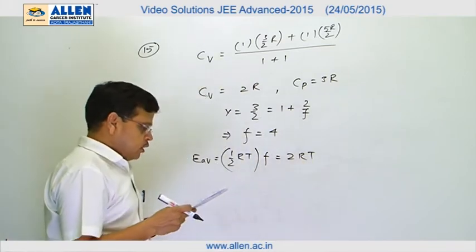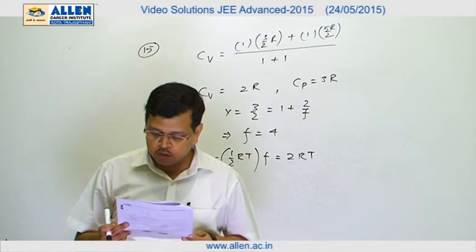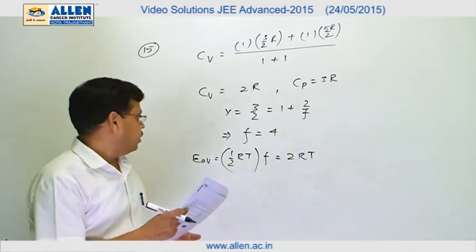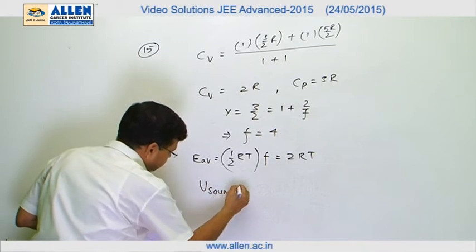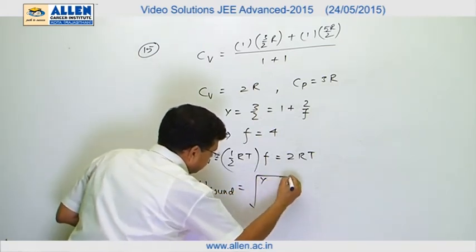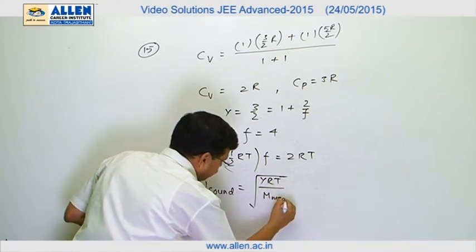Then we have to find the ratio of speed of sound in the gas mixture to that in helium. We know that velocity of sound in a gas mixture is equal to gamma RT divided by mean molecular mass.